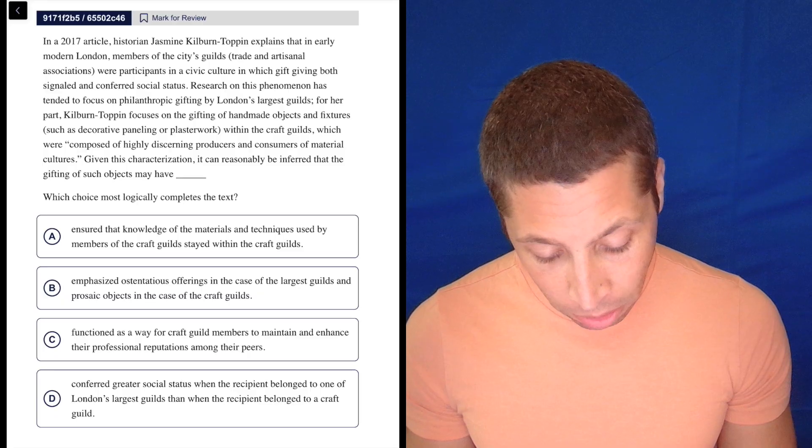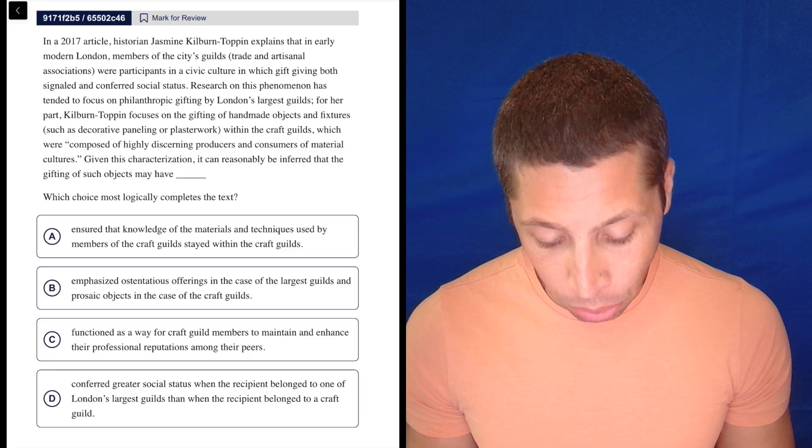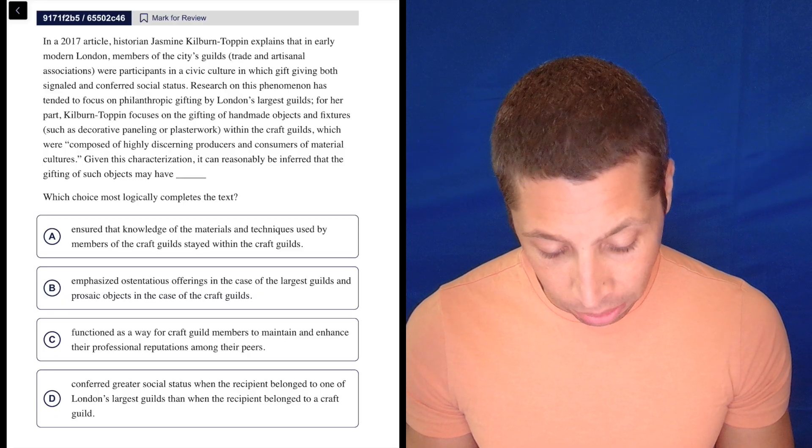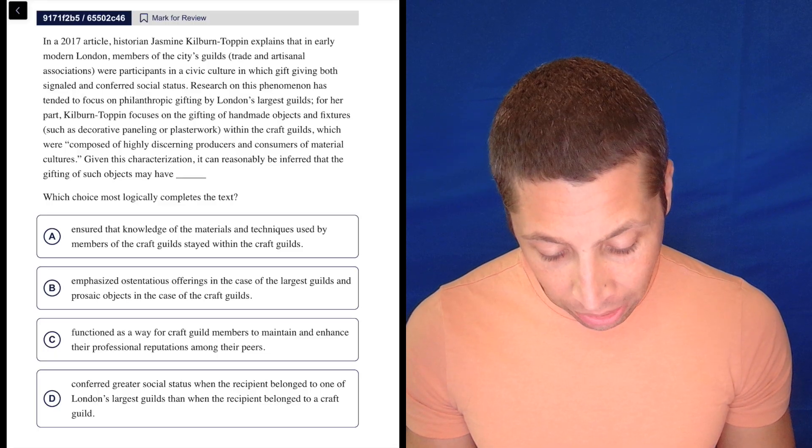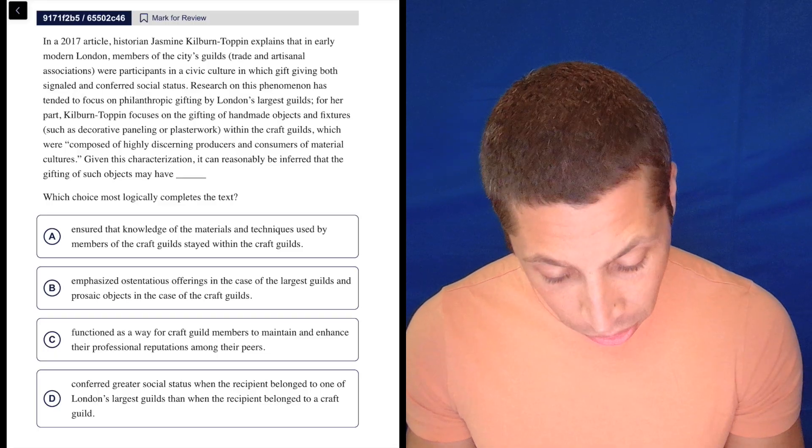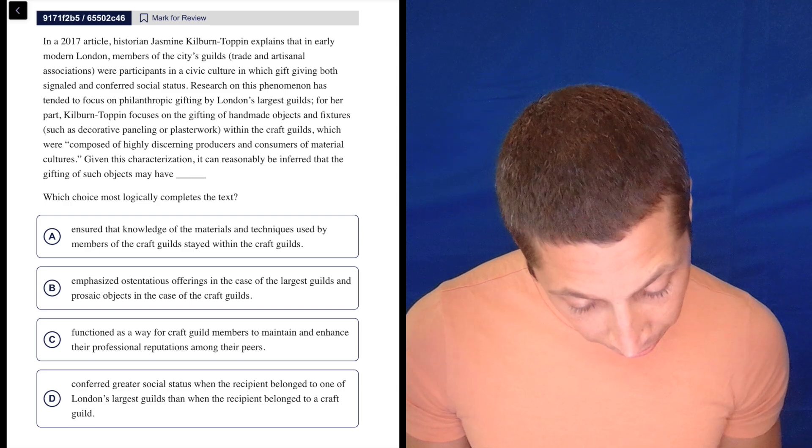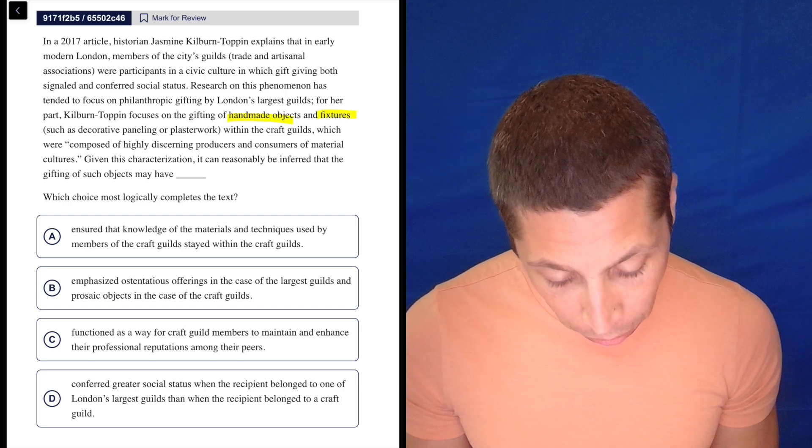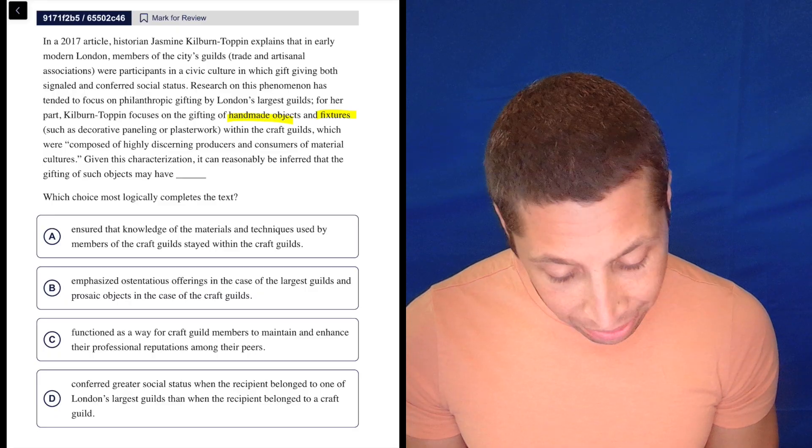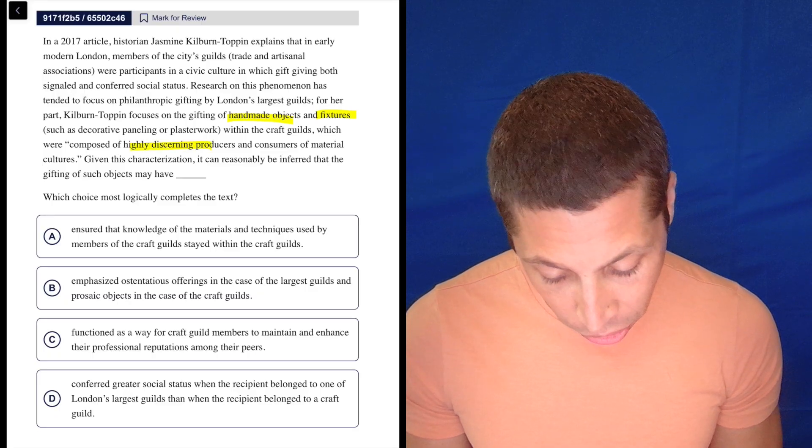...were participants in a civic culture in which gift-giving both signaled and conferred social status. Research on this phenomenon has tended to focus on philanthropic gifting by London's largest guilds. Okay, I already sense a but here. For her part, Kilburn-Toppen focuses on the gifting of handmade objects and fixtures, so that seems important, handmade objects and fixtures such as decorative paneling or plasterwork within the craft guilds, which were composed of highly discerning producers and consumers of material cultures.